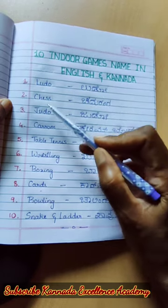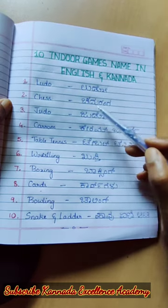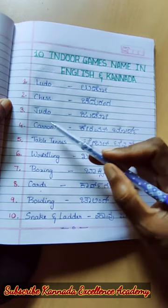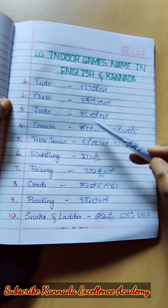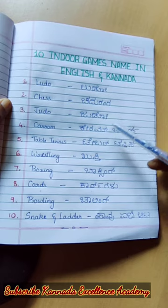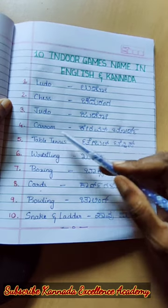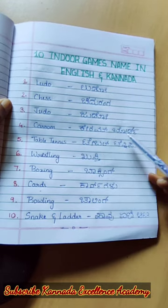Ten indoor games names in English and Kannada. Ludo. Chess — Cheduranga. Judo. Karam — Karambol.